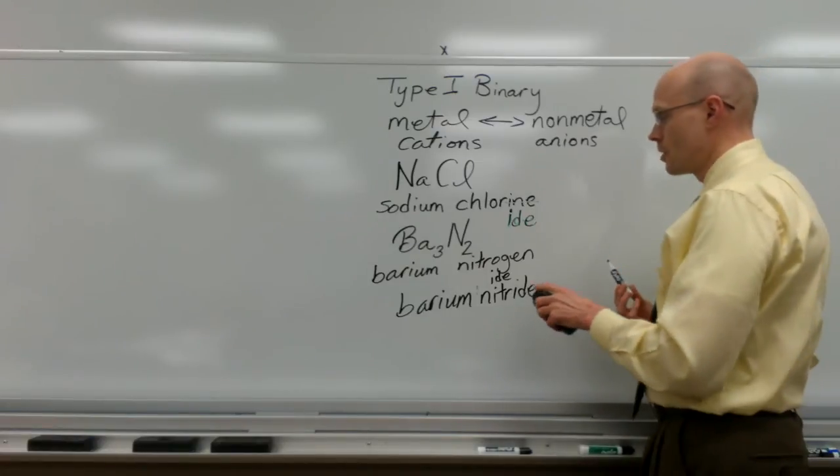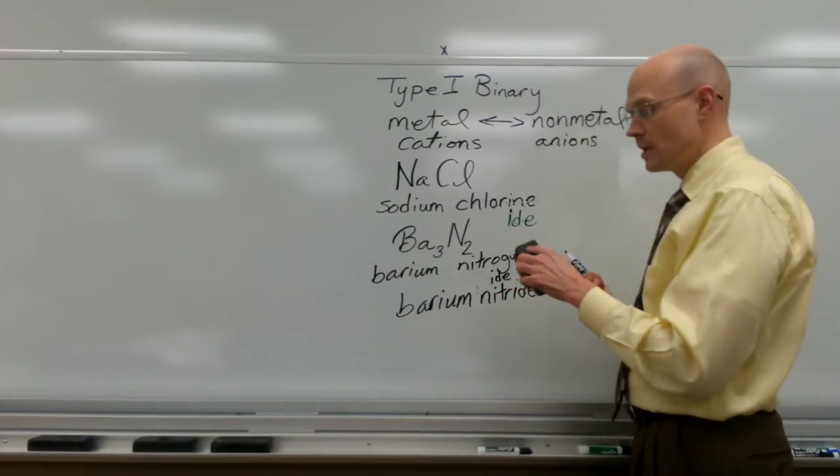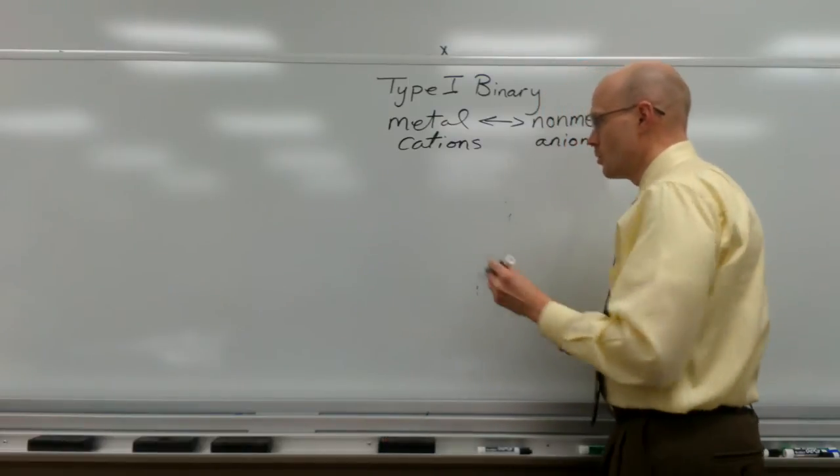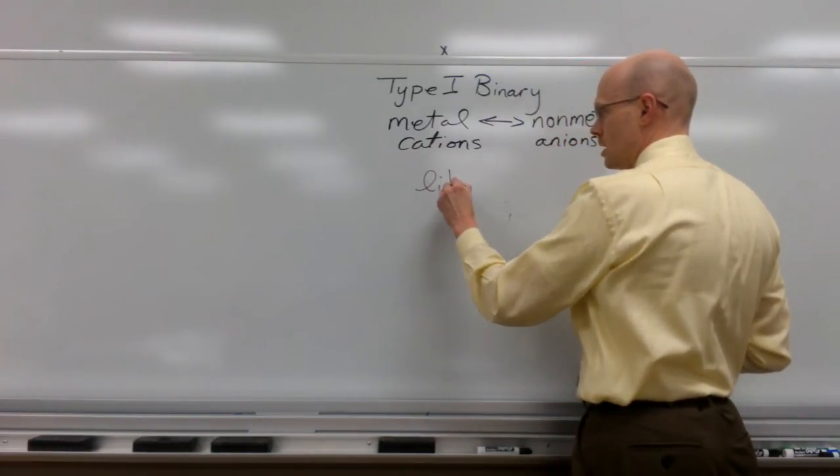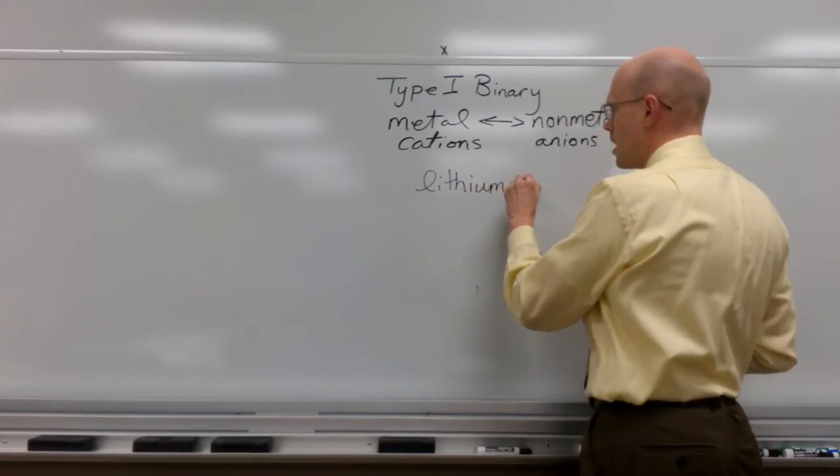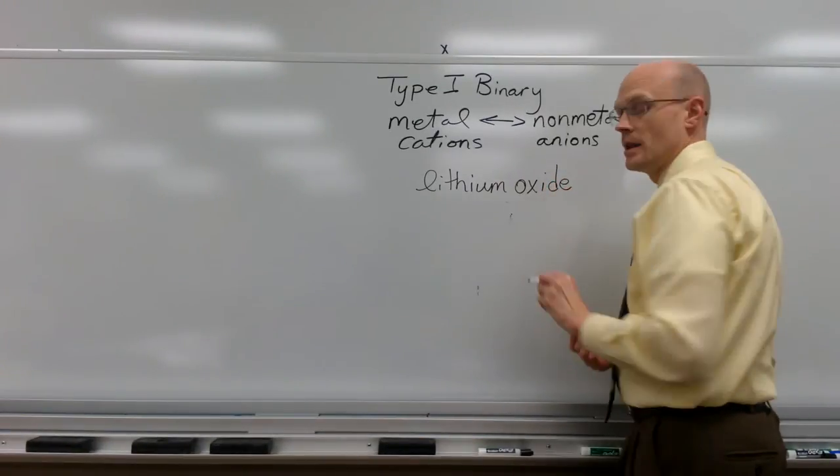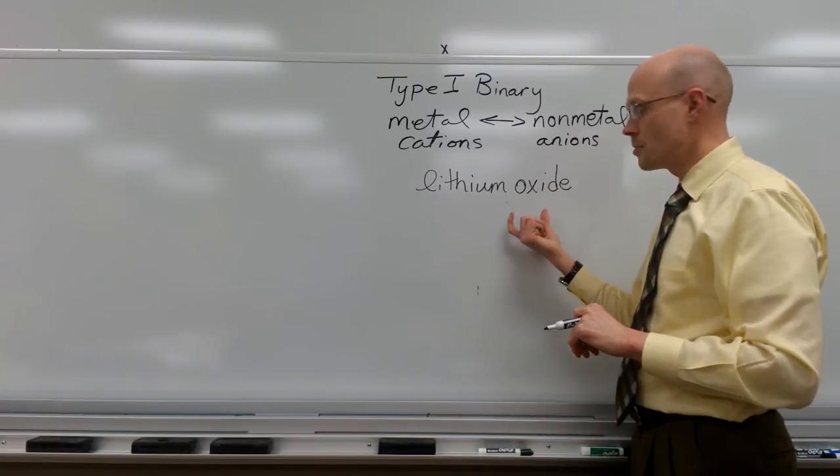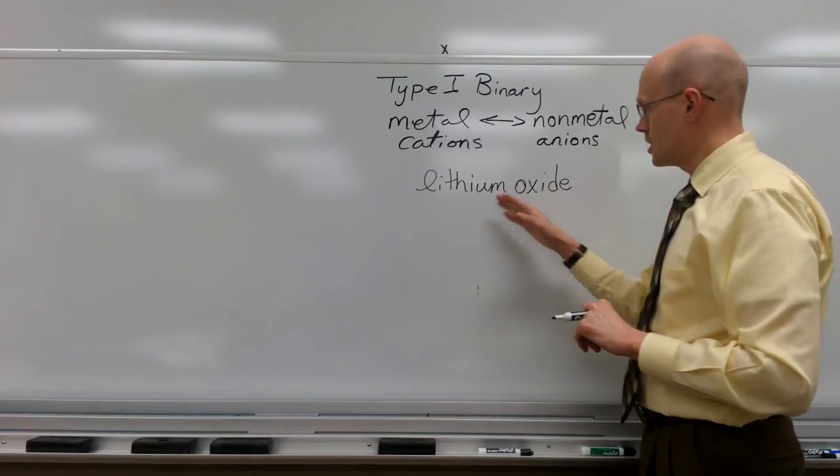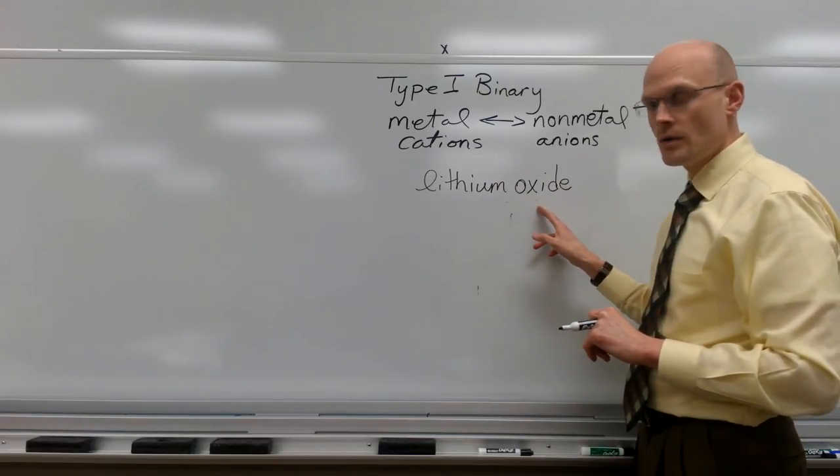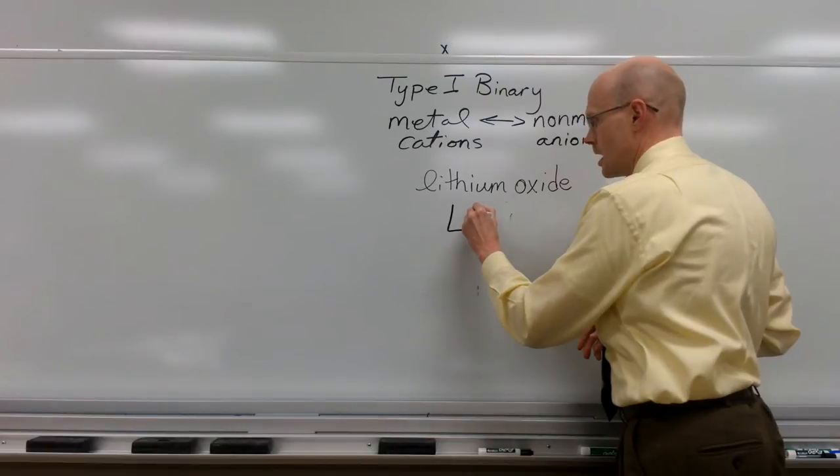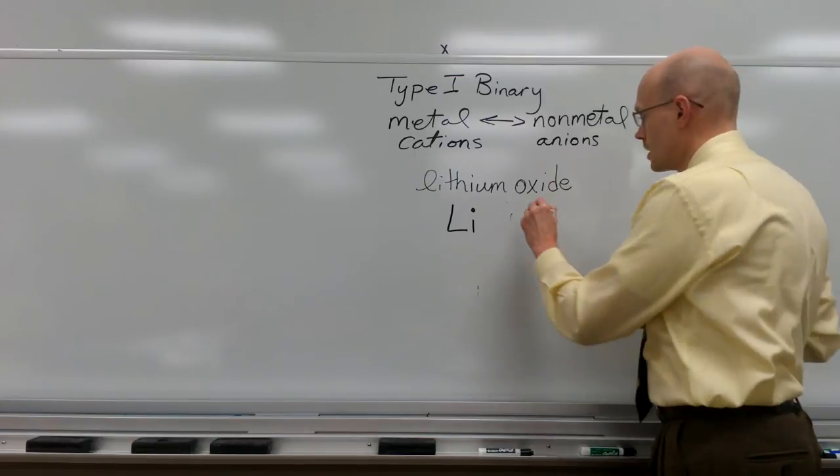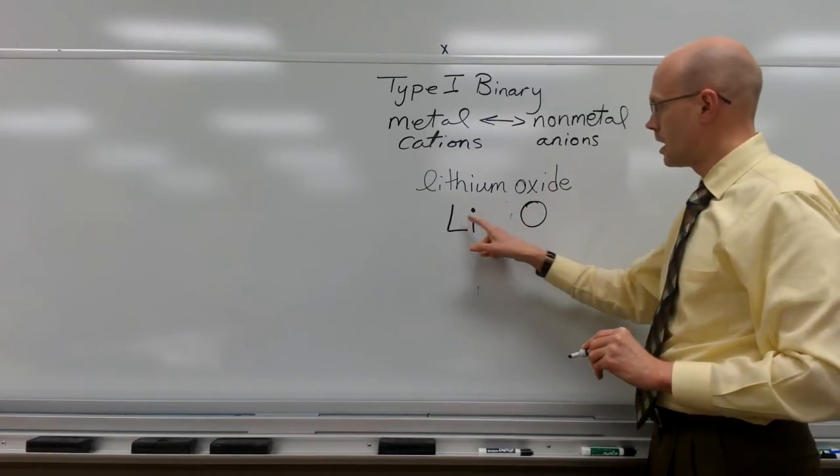Now let's try to go from the name back to the formula. Let's try some of those. So let's say we have the name lithium oxide. This is the name of our compound and we want to take the name and we want to create the formula that corresponds to this. The first thing we want to do is identify the two elements involved. Lithium which is Li. And oxide is coming from oxygen. So there are two elements involved. Li and O.